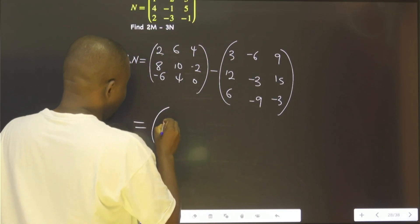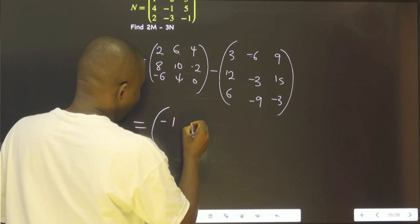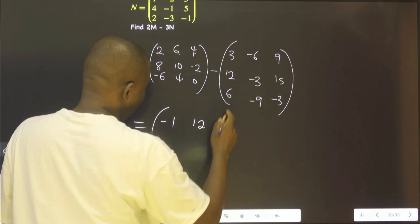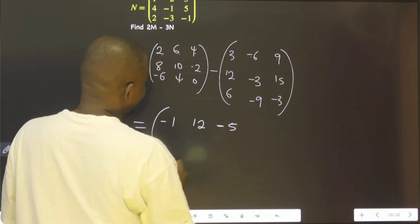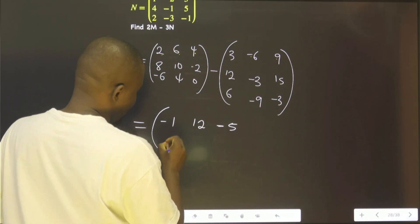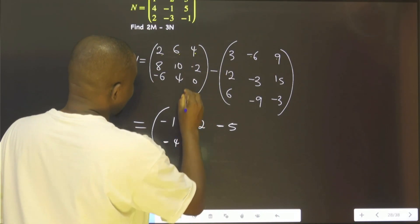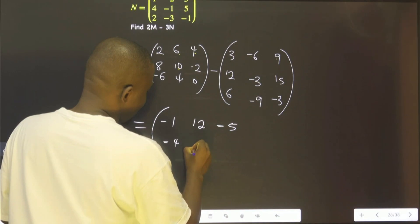This minus this will give us minus 1. This and this will give us 12. This and this will give us minus 5. This and this will give us minus 4. This and this will give us 13.